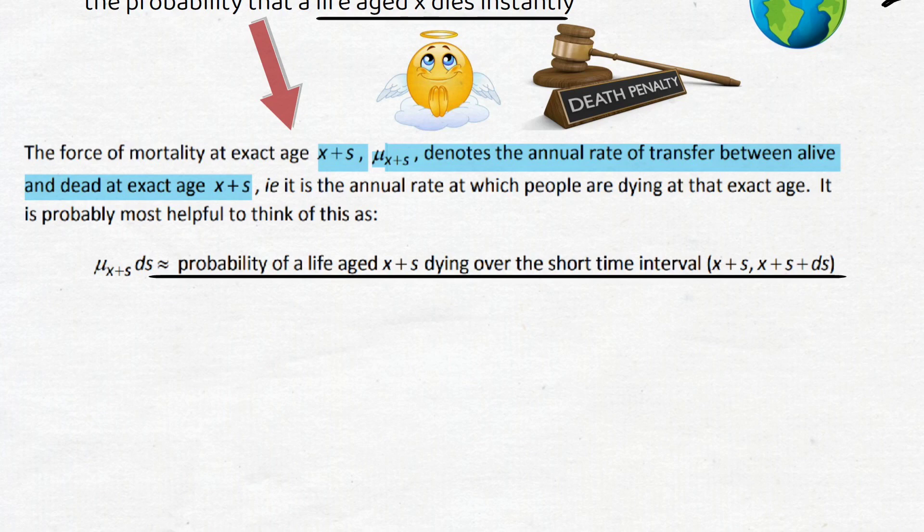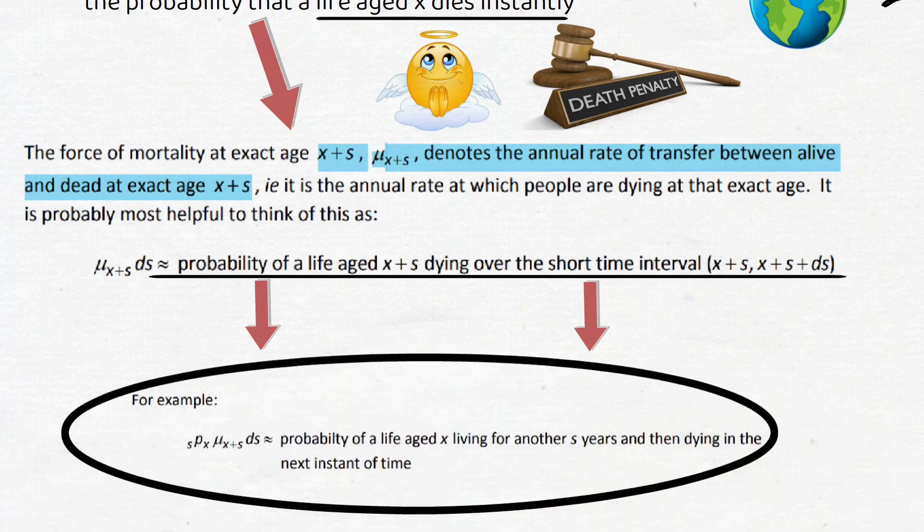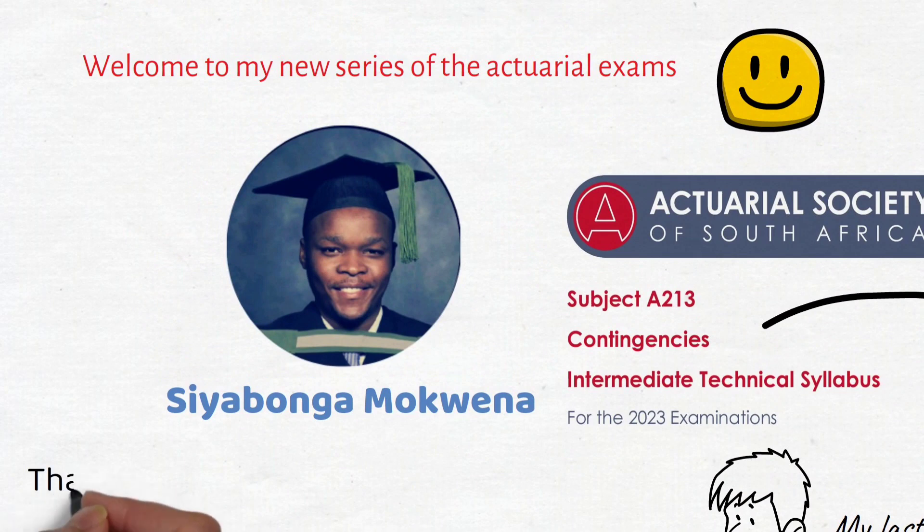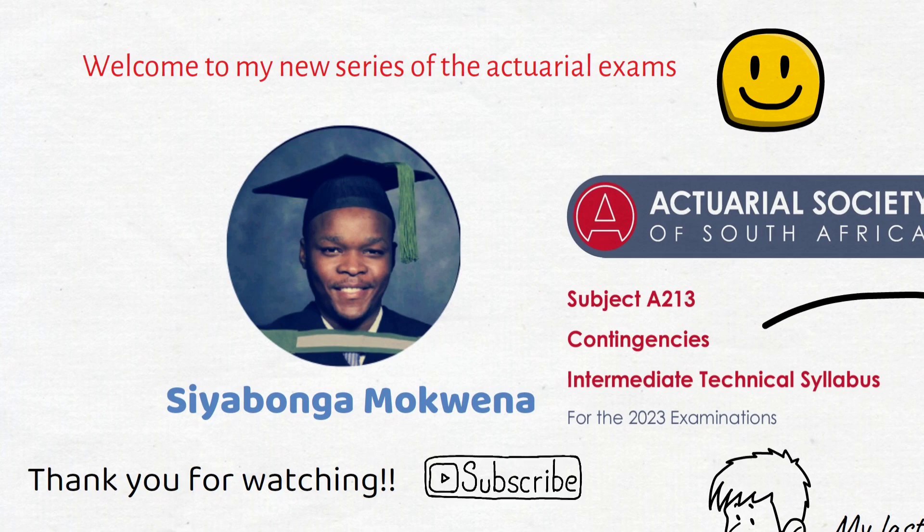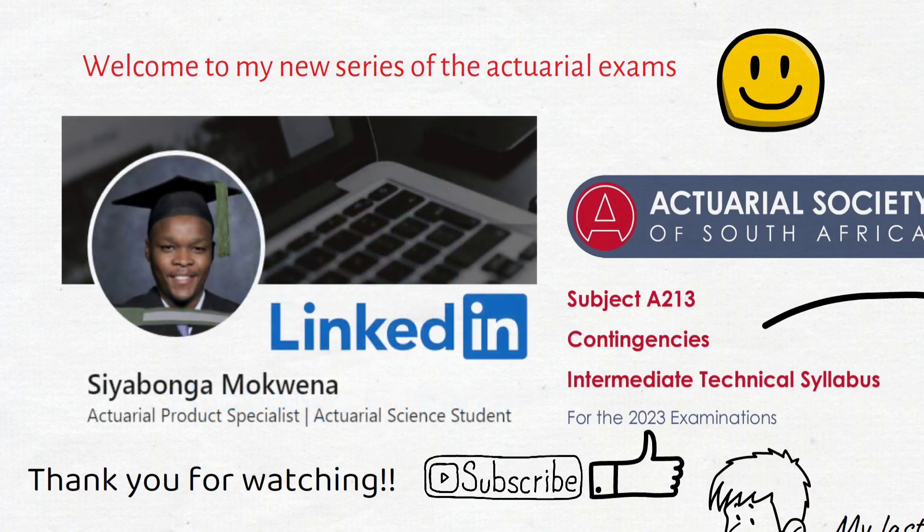So the force of mortality is just the probability that a life aged x dies instantly or in the next instant of time. Okay I think I'll end it here for this video. Thank you for watching. If you enjoy this kind of content, feel free to like and subscribe. I'm also available on LinkedIn if you'd like to connect and be part of my network. And all the best with your exams to those who are also writing in this session. I hope it all goes well. Let us keep pushing. Okay cheers.